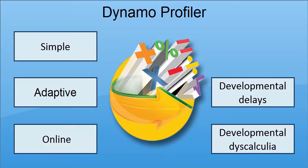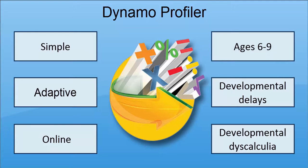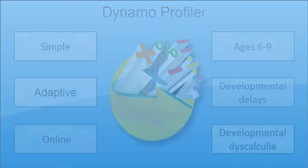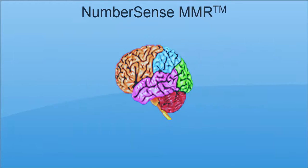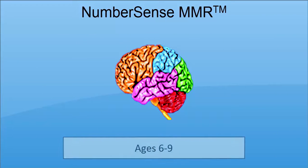The assessment is suitable for children aged 6 to 9, and for those older than 9, their results will be compared against those expected of a 9-year-old. The Dynamo Profiler assessment can be built around the NumberSense MMR framework, which has been developed from neuroscience research on how the brain learns maths and bringing together the educational pedagogy.